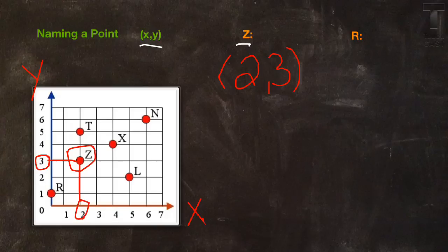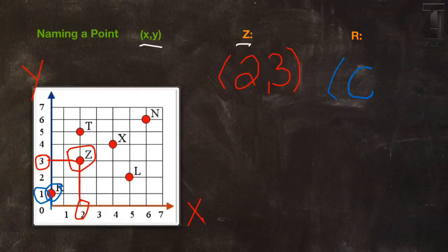Now for r — r is right here. R is actually at 0 on the x-axis and at 1 on the y-axis, so it would look like (0, 1).